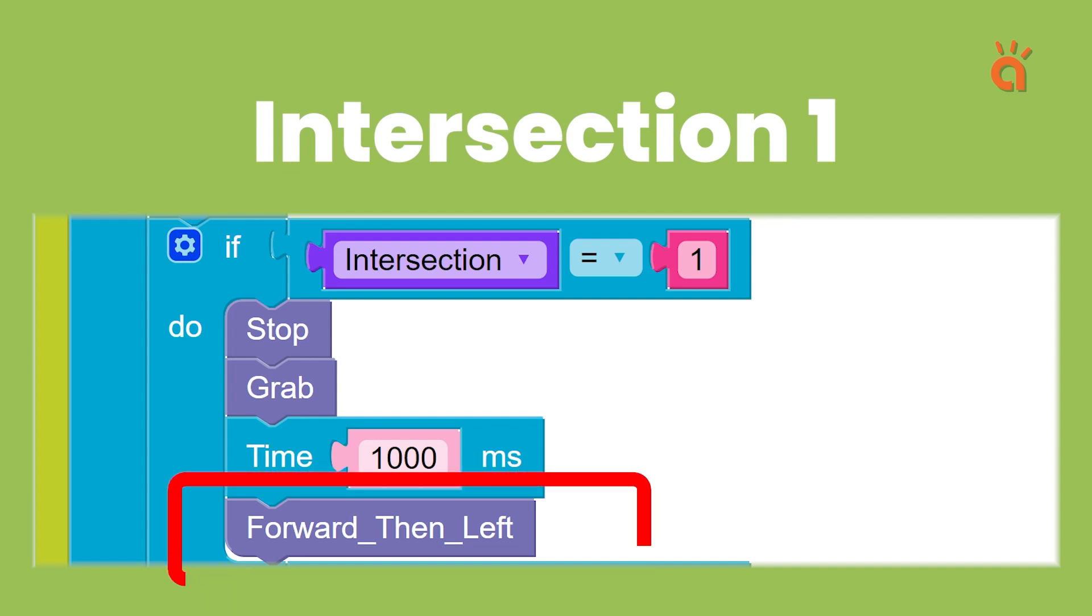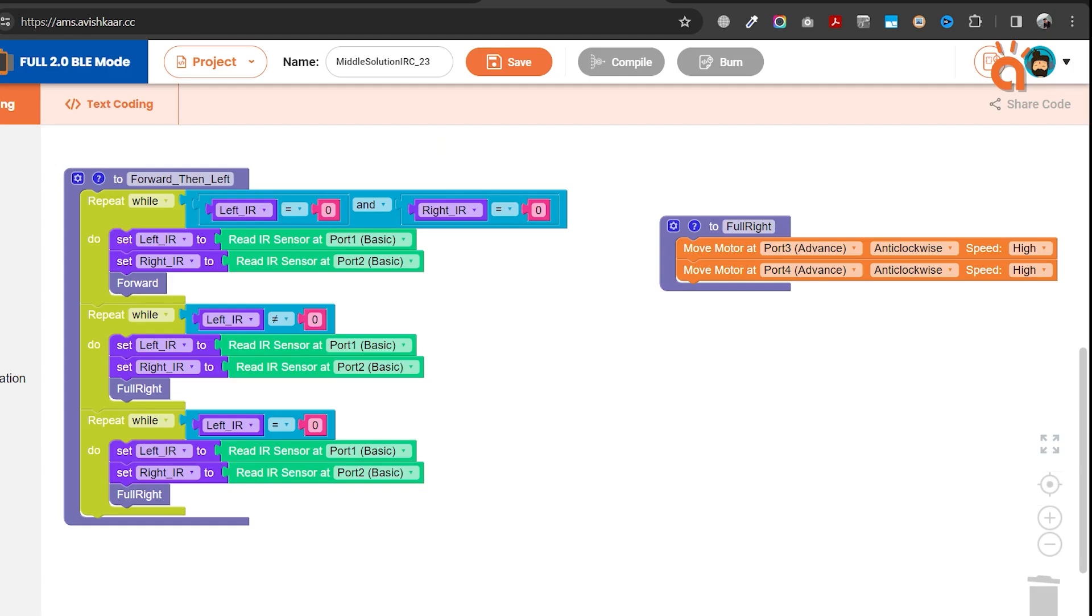With this function, the robot will first move forward until one of the sensor detects white. Then the robot will take a full right while the left sensor is on white. And lastly, the robot will further take a right while the left sensor is on black. This allows the robot to take perfect 90 degrees turn on such intersections.